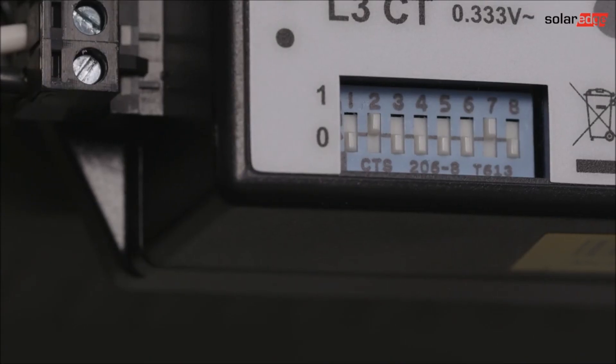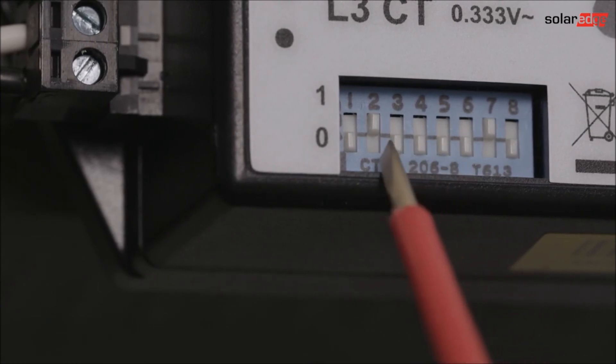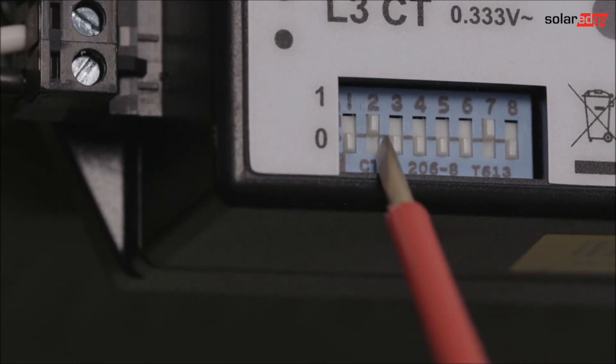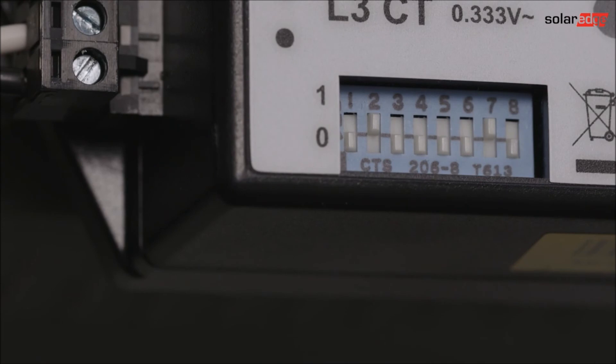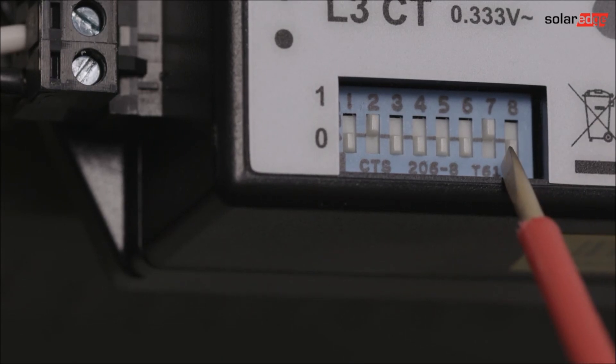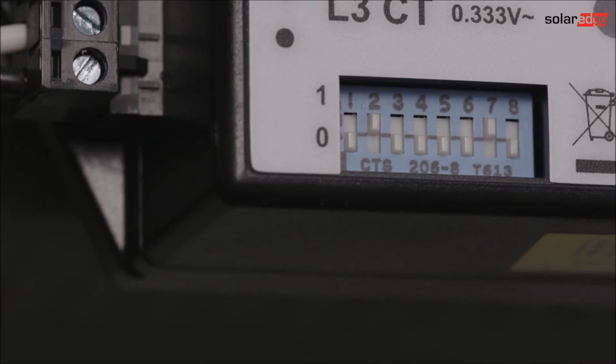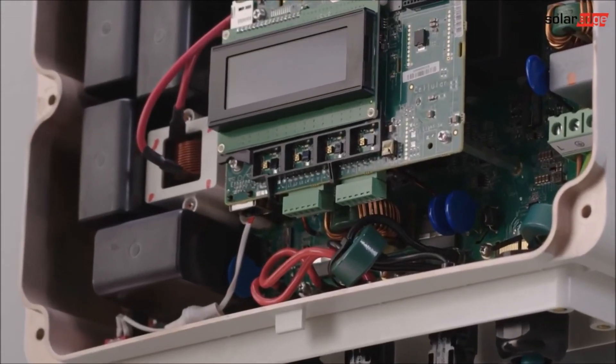Now we need to configure the meter. DIP switch number two needs to be up which is the on position to assign device ID to. If a meter with a WND part number is the first or last device on the RS485 bus move DIP switch 7 up to terminate the bus. Otherwise use the inverter termination.